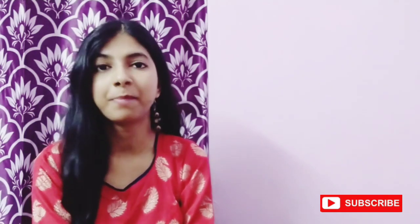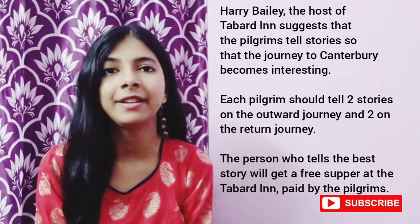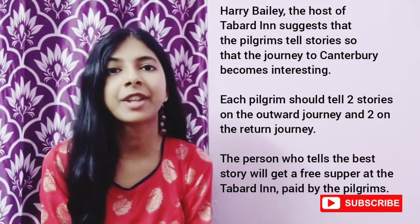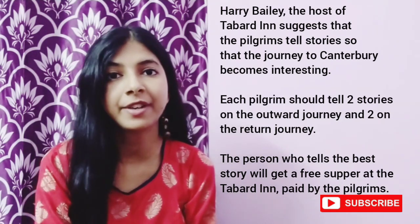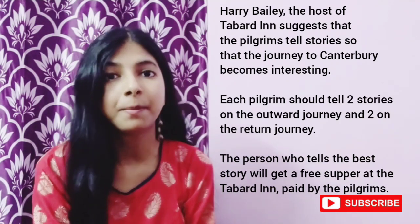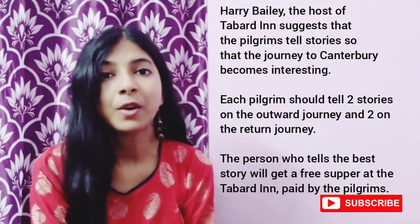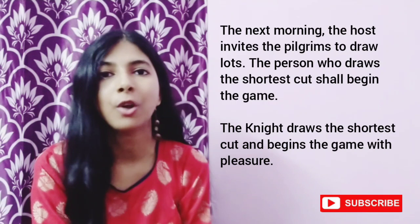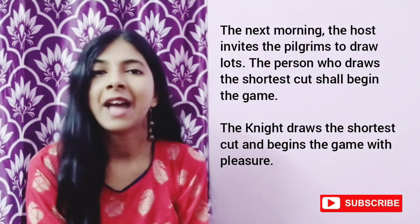After Chaucer describes all these pilgrims, he returns to the Tabard Inn where all the pilgrims had assembled. Harry Bailly, the host of the Tabard Inn, arranges a hearty supper for the pilgrims. In a playful spirit, the host suggests that the pilgrims should tell stories so that the journey to Canterbury becomes interesting. Each pilgrim should tell two stories on the outward journey and two on the return journey. The person who tells the best story gets a free supper at the Tabard Inn paid by the pilgrims. The host decides to accompany the pilgrims, all agree, and the next morning the host invites them to draw lots — the person who draws the shortest cut shall begin the game. The Knight draws the shortest cut and begins with pleasure.